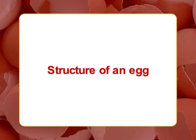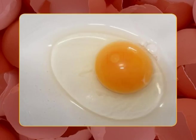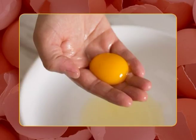Structure of an egg: The avian egg is a complex and highly differentiated reproductive cell. An egg consists of a shell, membrane, white or albumin, and yolk, and its structure can be seen with the naked eye or a lens. For the hen egg, the first component is the shell.